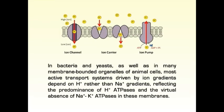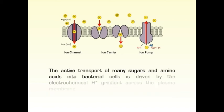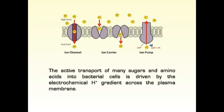In bacteria and yeasts, as well as in many membrane-bounded organelles of animal cells, most active transport systems driven by ion gradients depend on hydrogen ions rather than sodium ion gradients, reflecting the predominance of hydrogen ion ATPases and the virtual absence of sodium-potassium ATPases in these membranes. The active transport of many sugars and amino acids into bacterial cells is driven by the electrochemical hydrogen ion gradient across the plasma membrane.